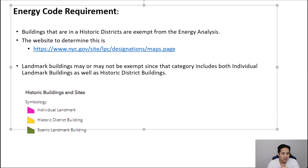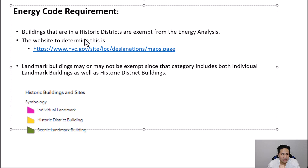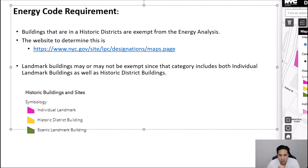The first step is determining whether the project requires energy code compliance. The main exception is if the building is in a historic district — it is exempt from the energy code. In all other cases it is required. To determine whether a building is in a historic district, you can go to the landmark map website.